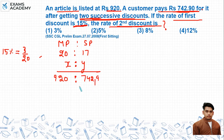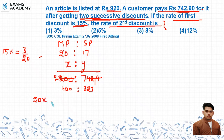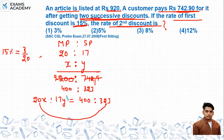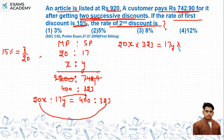Simplifying 920 to 742.90 — removing the decimal, we get 9200 to 7429, which simplifies to 400 ratio 323. Now to find the combined ratio, we multiply: 20 × 323 equals 17y × 400. So the equation becomes 20x × 323 = 17y × 400.